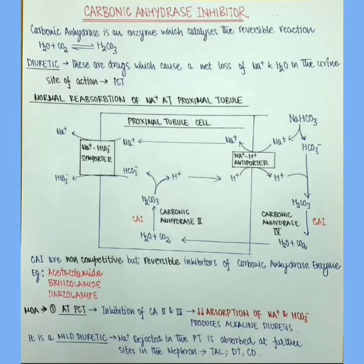Site of action of CAI is proximal convoluted tubule of nephron. Let us now understand the normal reabsorption of sodium that takes place at the PCT because inhibition of this reabsorption will lead to increased excretion of sodium in the urine and consequent diuretic action.